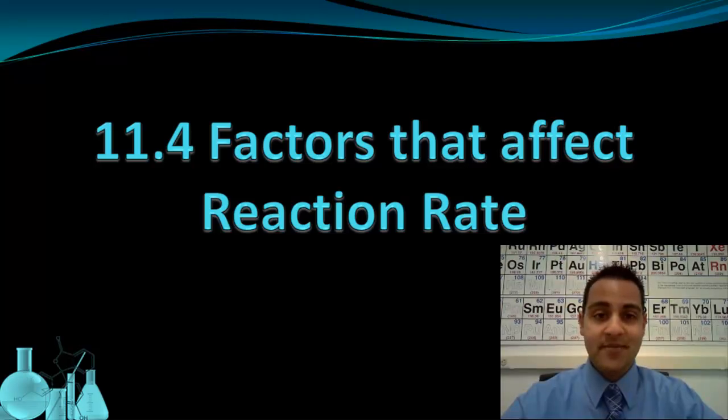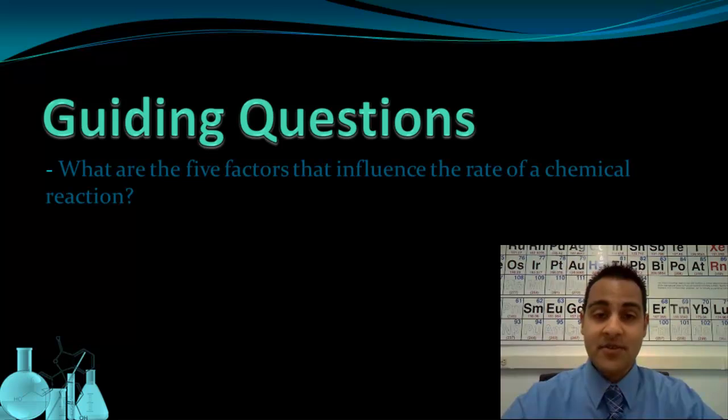Welcome to Factors That Affect Reaction Rate. There are five important factors that can control the rate of a chemical reaction, and most of these factors are related to collision theory. So let's take a look at collision theory first.